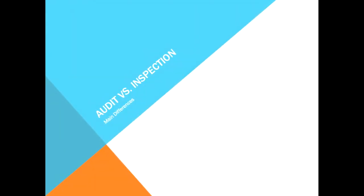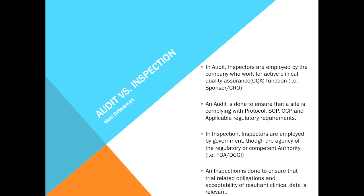Some of the major differences between an audit and an inspection are as follows. In an audit, inspectors are employed by the company and work for an active clinical quality assurance function. An audit is done to ensure that a site complies with protocol, SOPs, GCP, and applicable regulatory requirements. In an inspection, inspectors are employed by the government through the agency of the regulatory or competent authority — such as the FDA or the DCGI. An inspection is done to ensure that trial-related obligations and the acceptability of resultant clinical data are met.